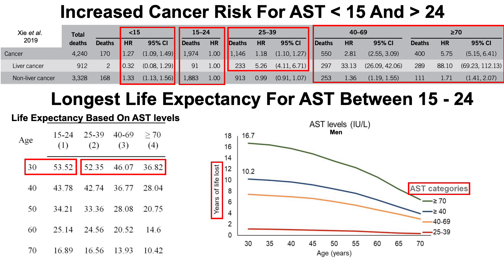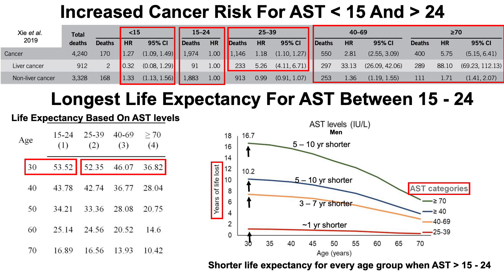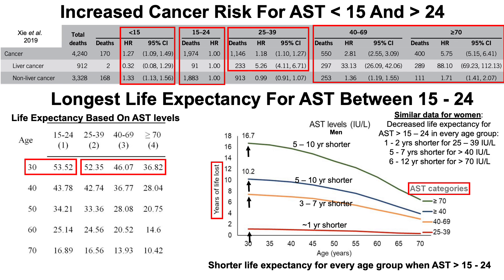This is illustrated in the graph showing years of life lost on the y-axis plotted against the AST categories, all compared with the 15 to 24 group. For 30-year-olds: about one year decrease in life expectancy for the 25 to 39 AST group, about a seven-year loss for AST 40 to 69, about a ten-year loss for AST greater than 40, and up to 17 years shorter life expectancy for AST greater than 70. This was true for every age group, and similar data were observed in women. So 15 to 24 had the longest life expectancy compared with all other AST groupings.